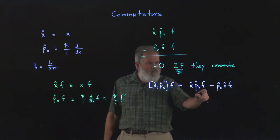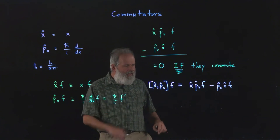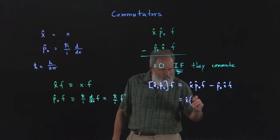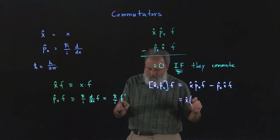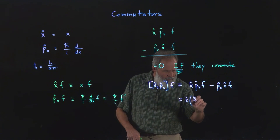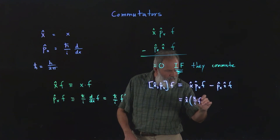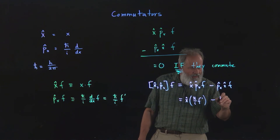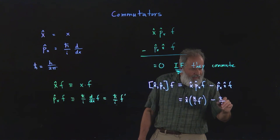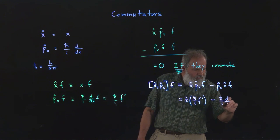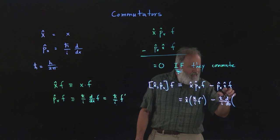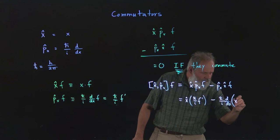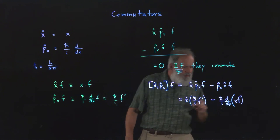Well we've already done p_x on f, we've got this guy. So I'm just going to substitute the result of the first one, h bar over i f prime. And then minus p_x hat, which is this derivative, and the result of x times f, which is xf.